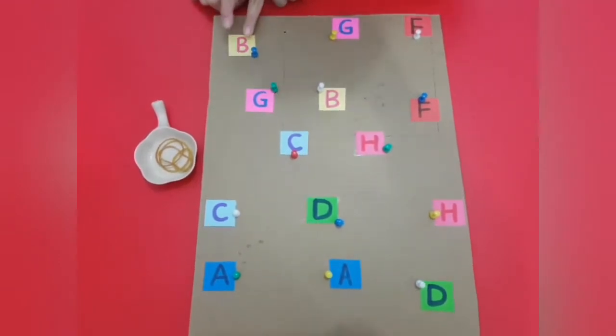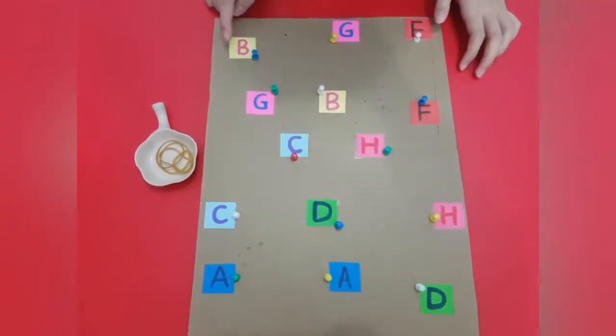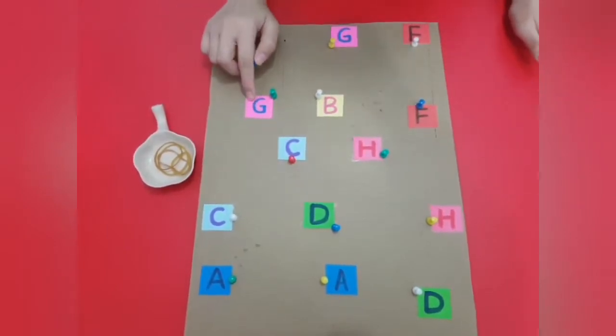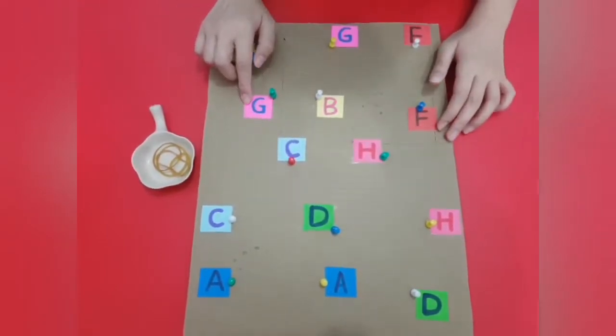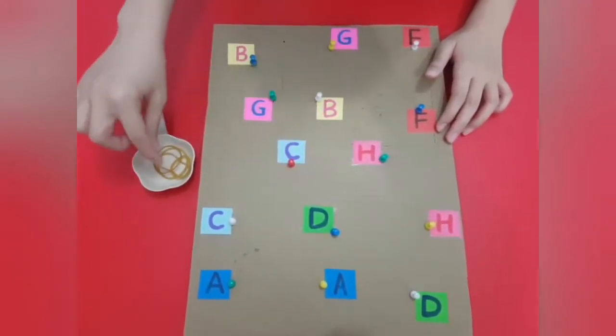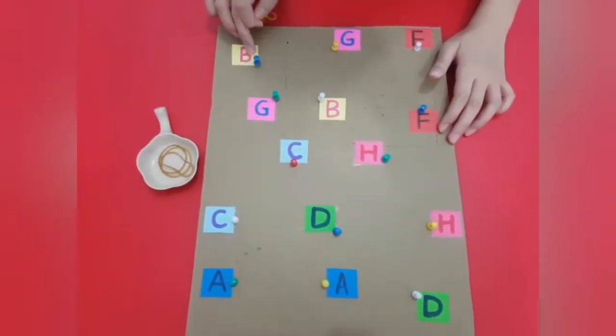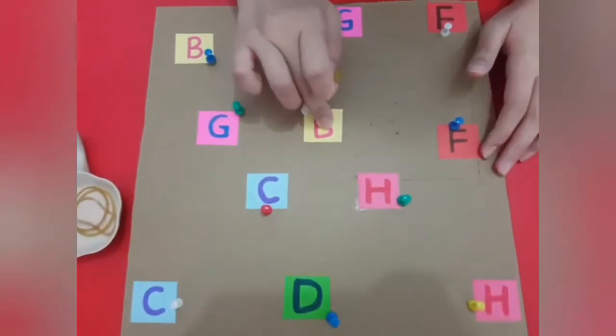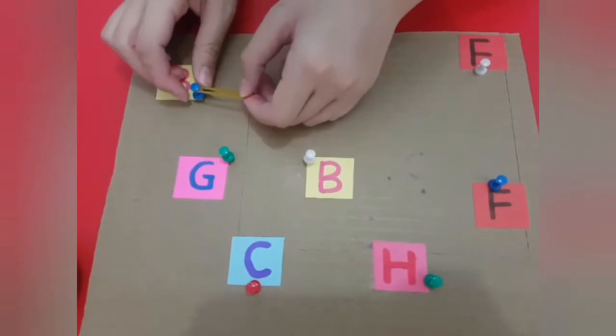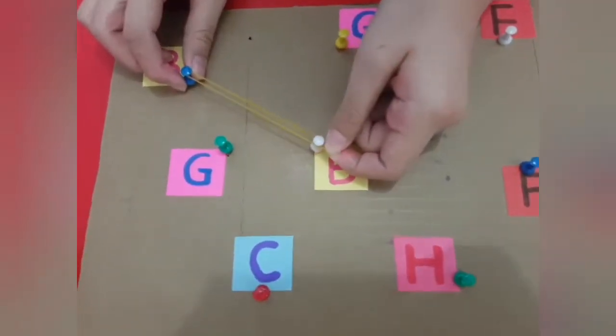You take the rubber band and start with a letter. Now Miss will start with letter B. Then Miss will find where letter B is. Is this B? No, this is G. Is this B? Yes, here it is. Then Miss pulls the rubber band and matches it to the letter B.